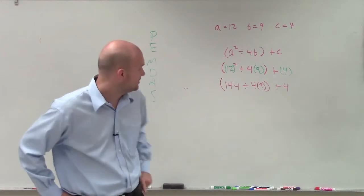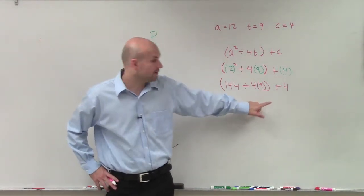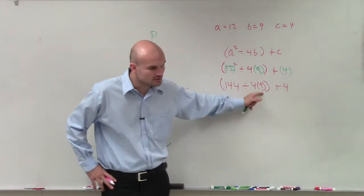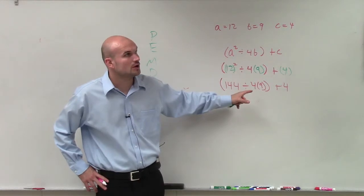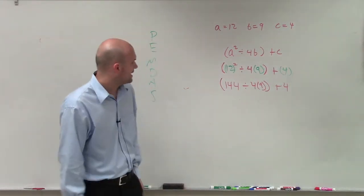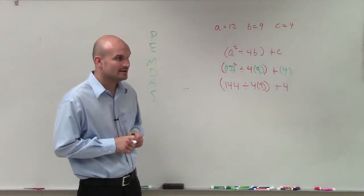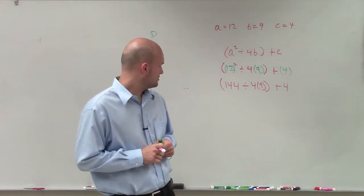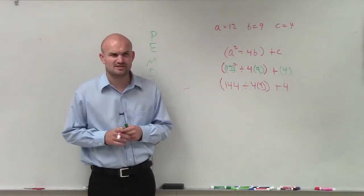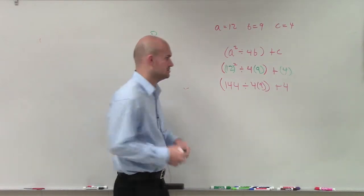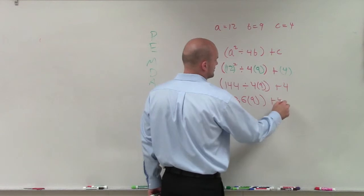So we know that 40 goes into 80 20 times, right? It would go into 20, so it would go into 120 would be 30 times. And no, 120 would be, yeah, 120 would be 30 times. And then we have 24, so we get 36. Anybody else get 36? No? I don't know.